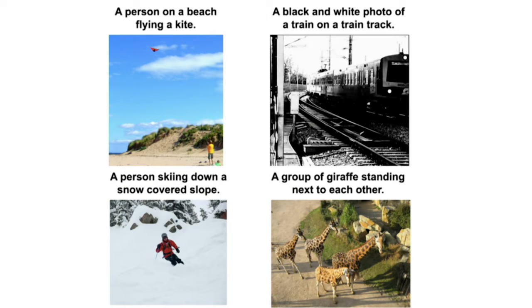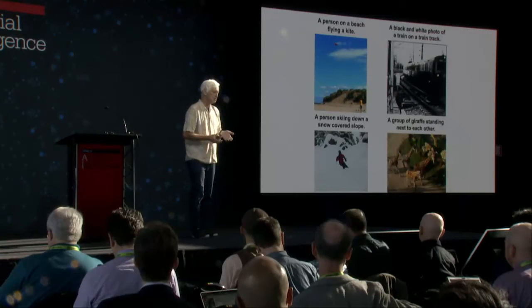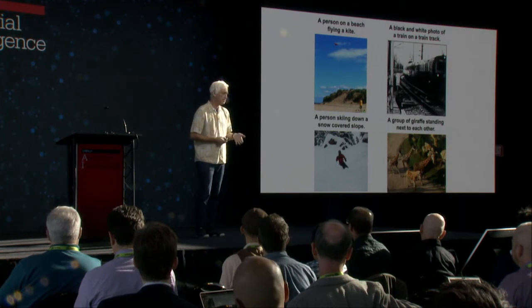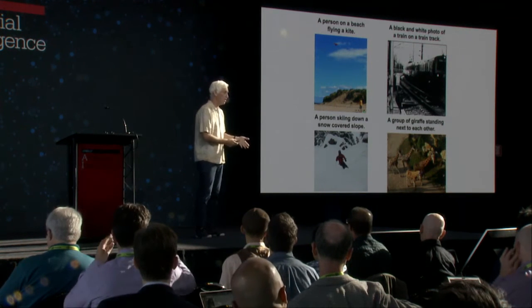I want to talk in a little more detail about just one of them. At Google, we just open-sourced this week a system for captioning pictures. You train the system by showing it a bunch of pictures with captions, then test it by showing it a new picture it's never seen before, and it has to write the caption for it. Here are some examples of what it does well — it does a pretty good job. This could be a really useful service, like captioning images for the blind so they can see what's going on. We could do that all automatically.